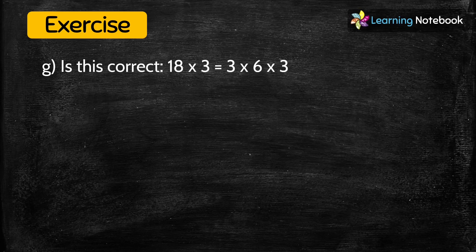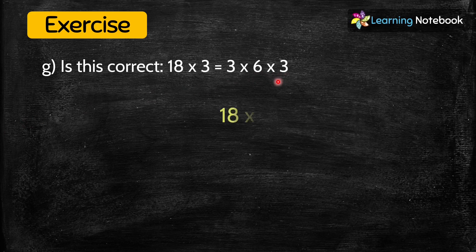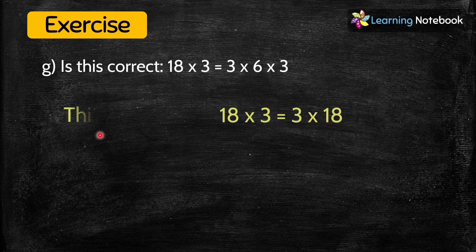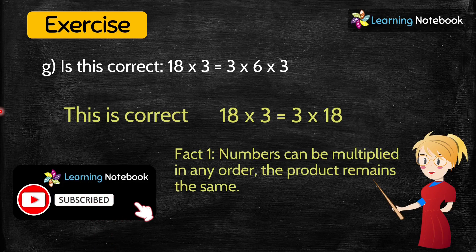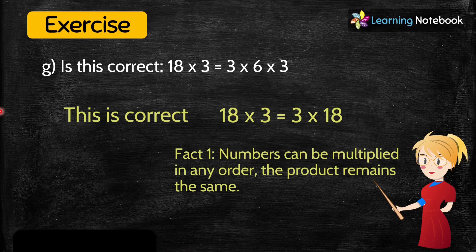Now the last question: is this correct — 18 × 3 = 3 × 6 × 3? Here, 6 × 3 can also be written as 18, therefore 18 × 3 equals 3 × 18. So this statement is correct because we learned in fact 1 that numbers can be multiplied in any order and their product remains the same.